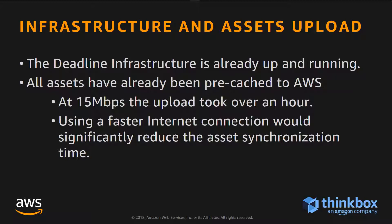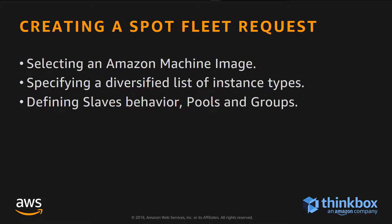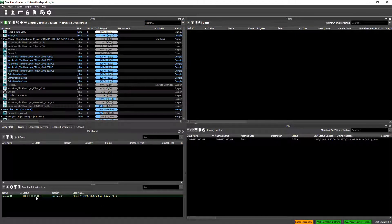We have the infrastructure running because I needed to pre-cache all the assets, which normally takes about an hour to upload using the 15 Mbps connection. However, a company with a significantly faster internet connection would be able to do this in minutes or just a few seconds. Next, we'll create a SpotFleet request. We can open the SpotFleet request dialog from the right-click menu. It takes a few seconds since the dialog is pulling data from AWS about current prices and available instances.